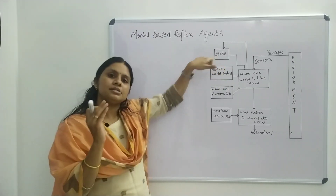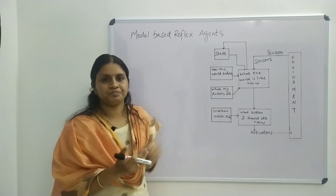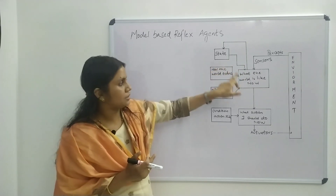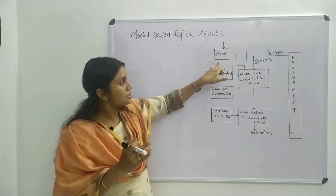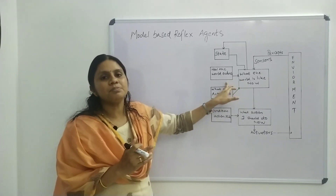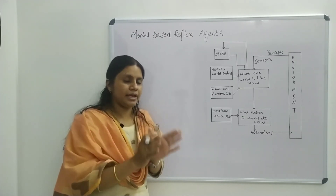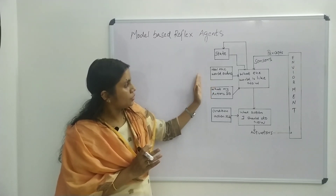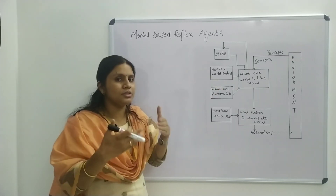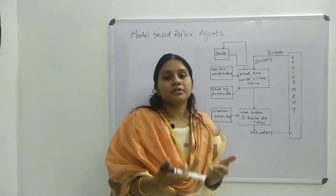This internal state keeps track of the current percept and also the percept history. The current percept is getting saved into this internal state — it maps the current percept and the percept history, and the current state is stored inside the agent which cannot be seen. Updating the state requires knowledge about how the world is evolving and how the agent's actions affect the environment.